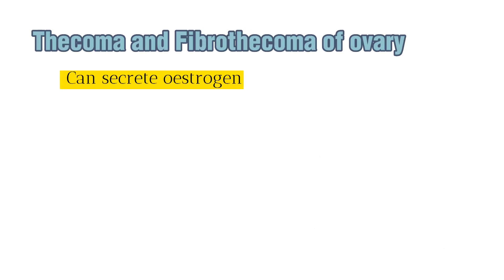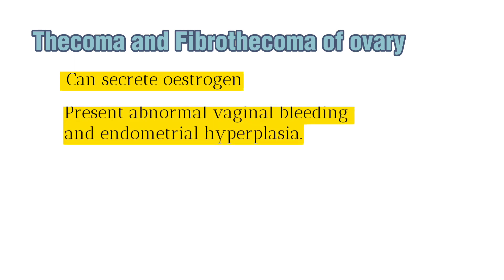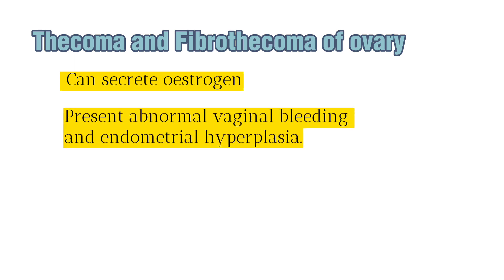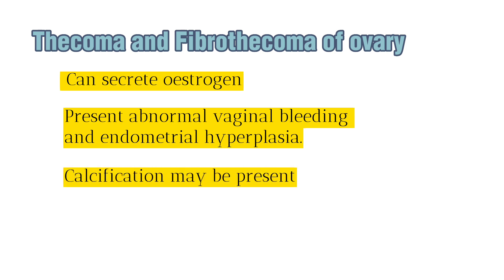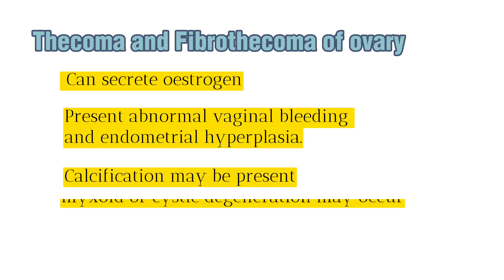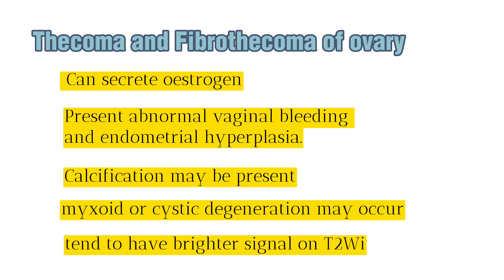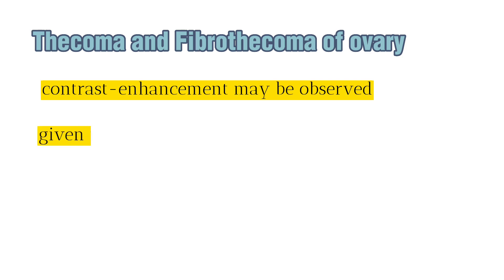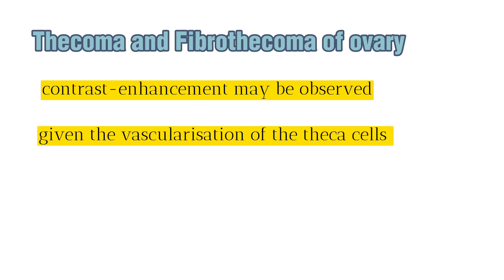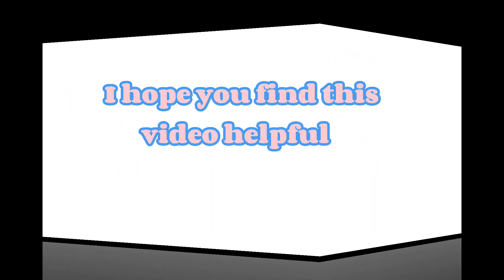Thecoma and fibrothecoma can secrete estrogen and clinically may present with abnormal vaginal bleeding and endometrial hyperplasia. Calcification may be present, and as these tumors enlarge, myxoid or cystic degeneration may occur, resulting in a heterogeneous pattern. They tend to have brighter signal on T2-weighted images given edema and cystic degeneration, and contrast enhancement may be observed given the vascularization of the theca cells.